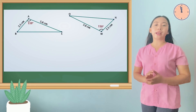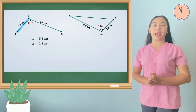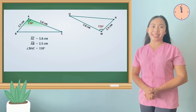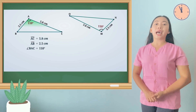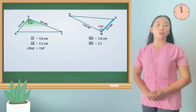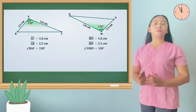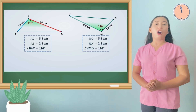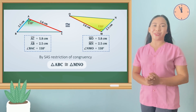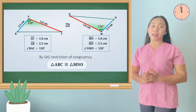Here, two triangles are given. In triangle ABC, side AC is equal to 5.8 centimeters, side AB is equal to 2.5 centimeters, and angle BAC is equal to 110 degrees. In triangle MNO, side MO is equal to 5.8 centimeters, side MN is equal to 2.5 centimeters, and angle NMO is equal to 110 degrees. The corresponding two sides and the included angle of triangle ABC are equal to those of triangle MNO. So, triangle ABC is congruent to triangle MNO by the SAS congruence postulate.